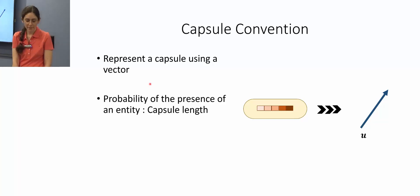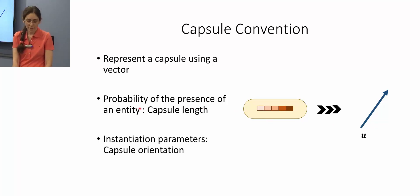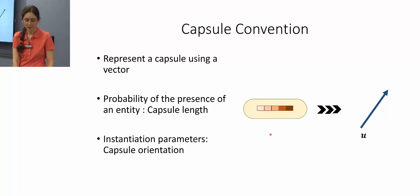We use the capsule length to indicate the probability of presence of an entity and capsule orientation to represent the instantiation parameters of an entity.